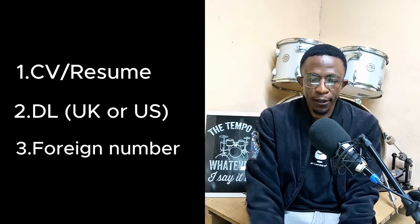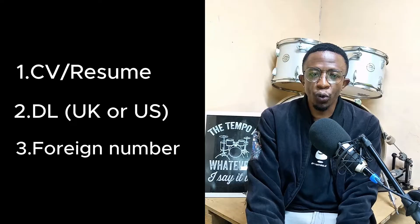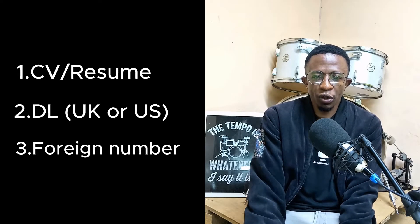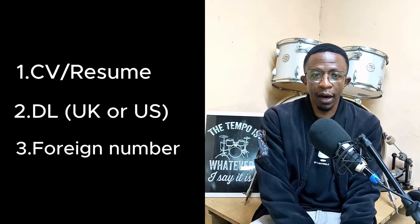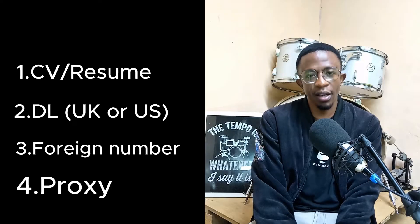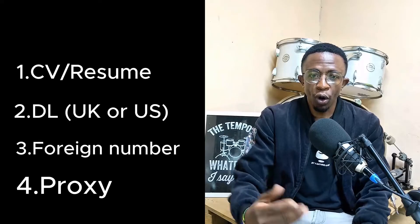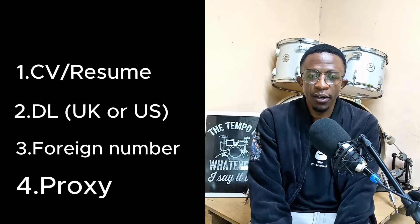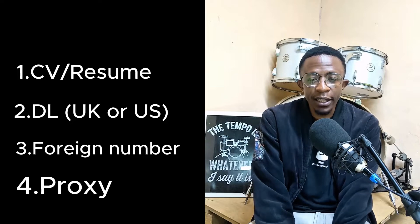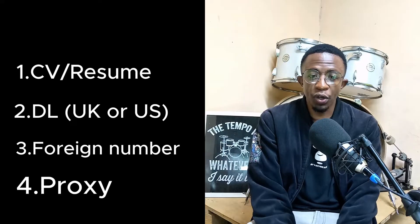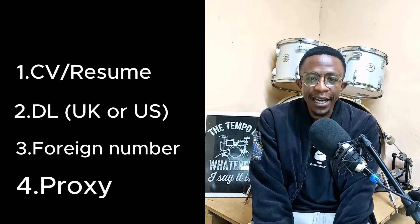The first thing you have to do is find a job you can do on Outlier — but we also didn't mention a proxy. Yes, you need a proxy too. So you need four things: a resume, proof of residency (it can be a passport or anything else), a foreign phone number, and finally a proxy.